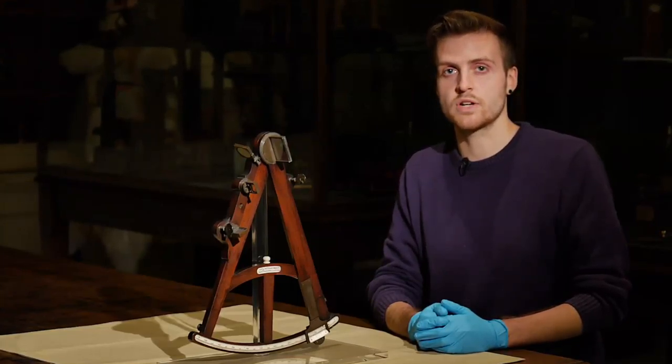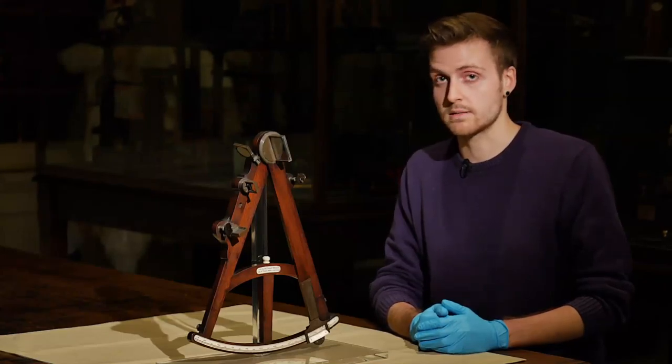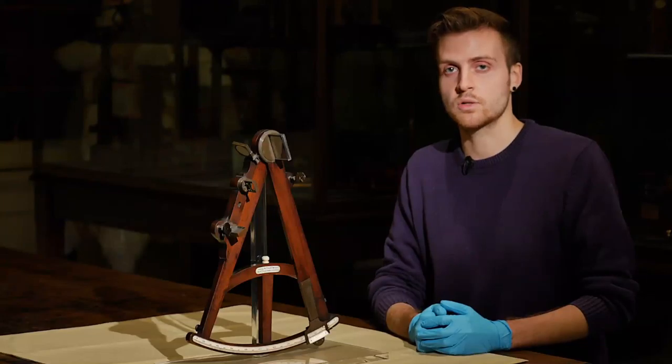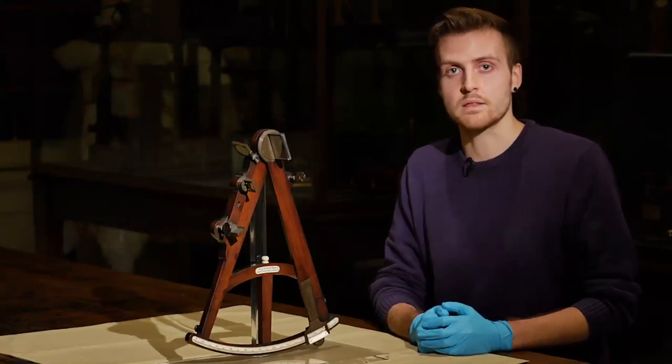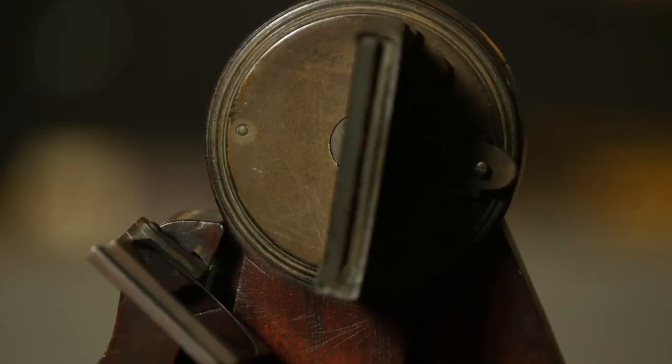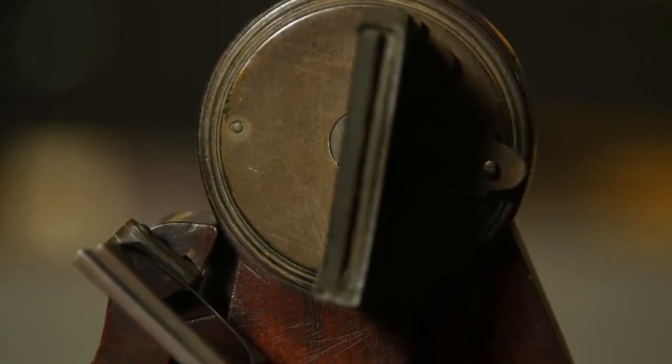Well, if you were a relatively wealthy and well-trained navigator, you might have owned one of these. This, believe it or not, is an early form of GPS. It's called an octant because its shape forms an eighth of a circle, and it was used to calculate one's latitude when at sea.